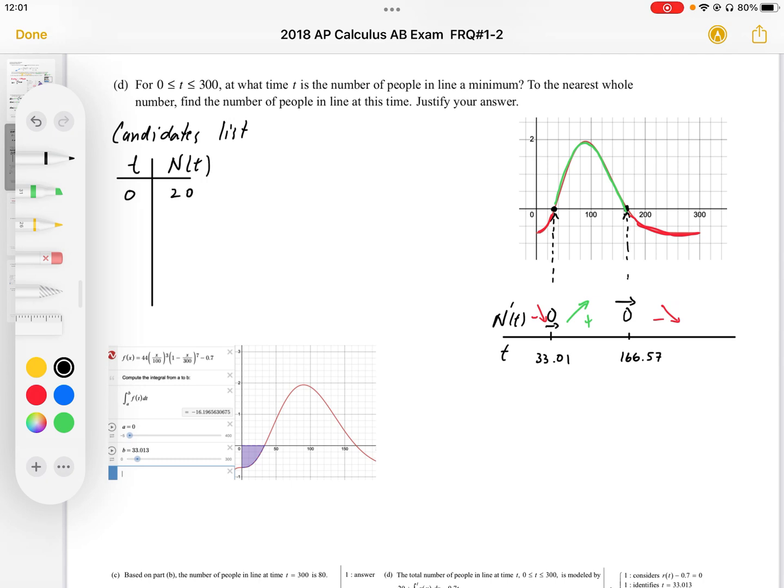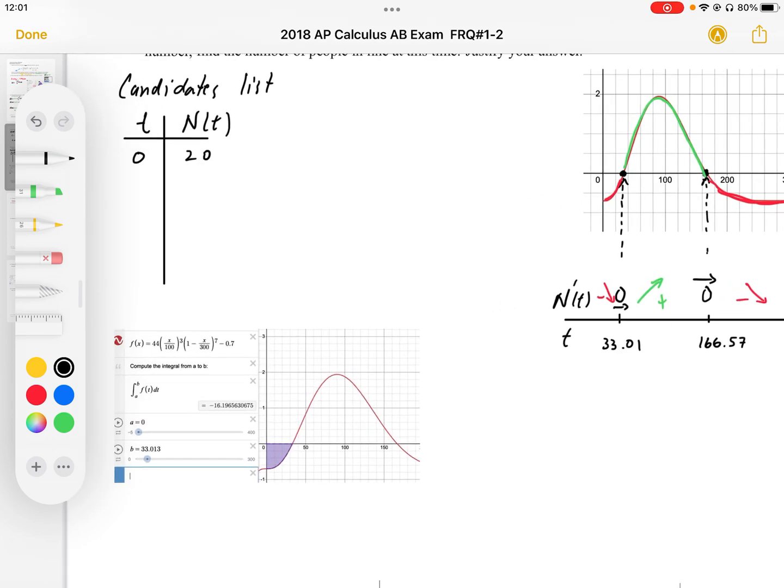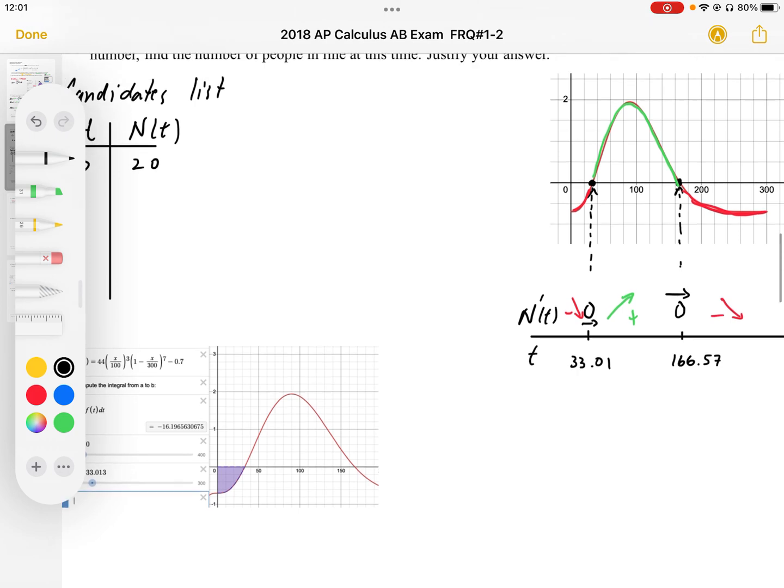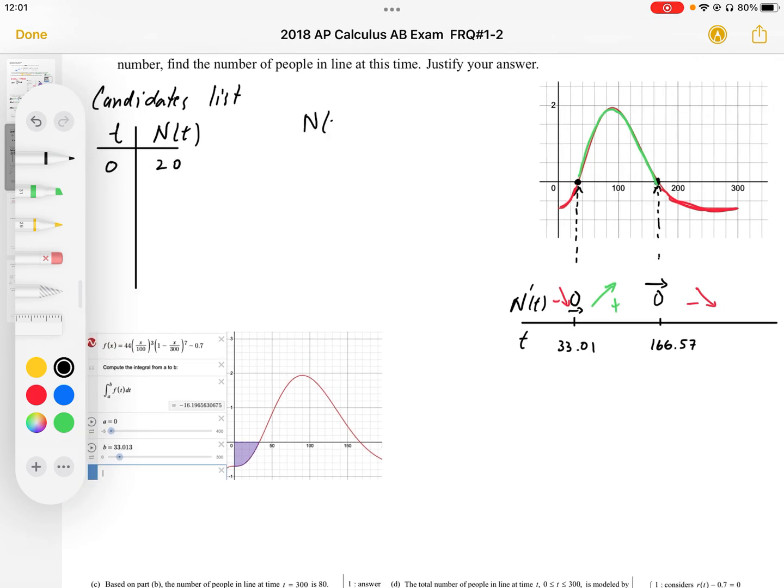At t equals 33.01, we have to consider the area. So n at 33.01 is going to be equal to my starting point of 20 plus the area underneath that, the rate minus the l function from 0 to 33.01. So that's my r of t minus my l of t, where l represents the number of people leaving.